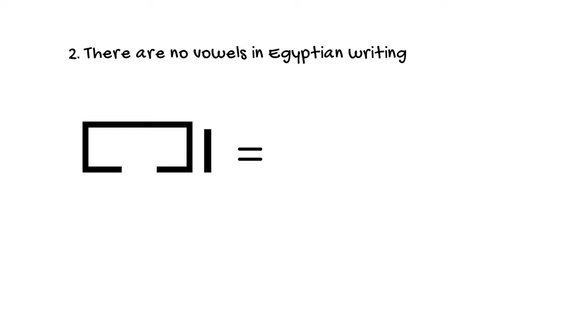Number two: there are no vowels in Egyptian writing. So you may have noticed earlier that when I mentioned these 25 signs, I said that they represented consonant sounds. And you might have been wondering, what about the vowels? Well, the ancient Egyptians actually did not write the vowels at all, only the consonants.